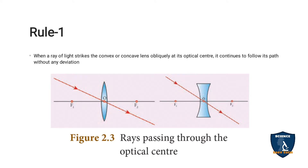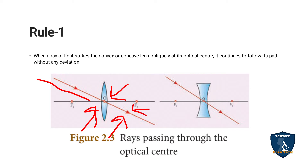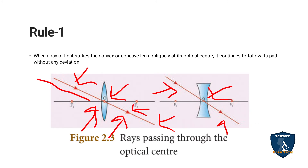The first rule: when light is passing through the optic center, after refraction through the lens, there is no deviation. This arrow mark resembles the direction the light passes — it passes obliquely, but there is no deviation after refraction. This is seen in the convex lens, and in the concave lens as well when light passes through the optic center — after refraction, there is no deviation. The same rules are applicable for both convex and concave lens.